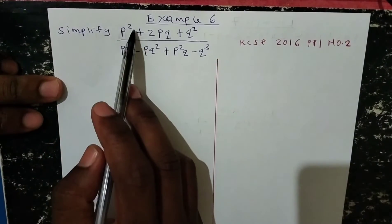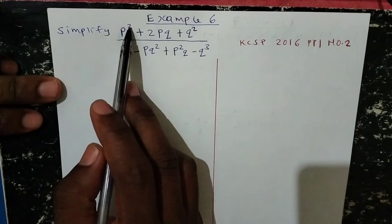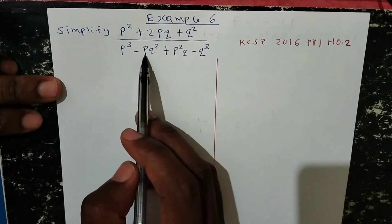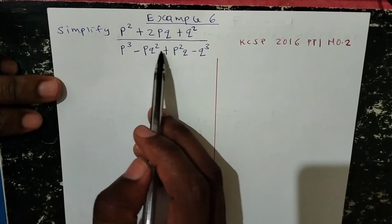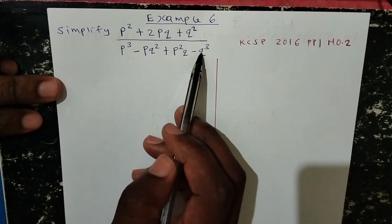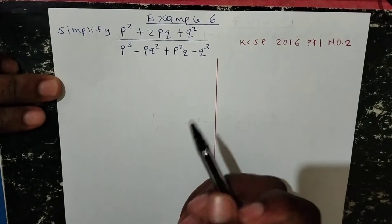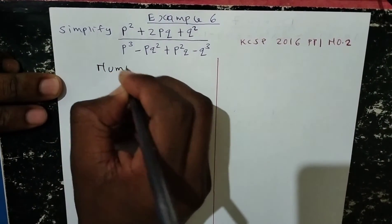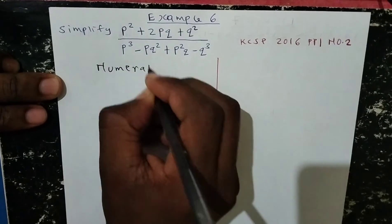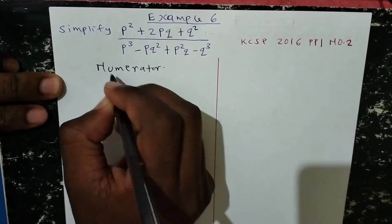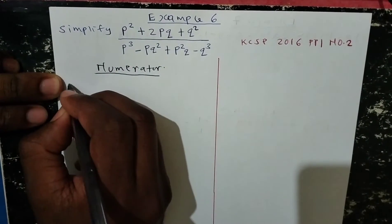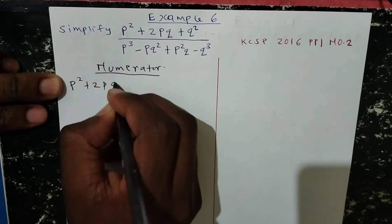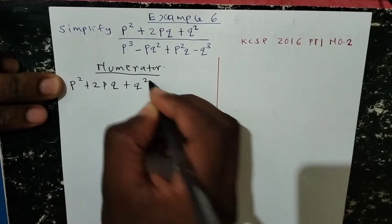The question reads: simplify p squared plus 2pq plus q squared, divided by p cubed minus pq squared plus p squared q minus q cubed. We are going to start with the numerator.